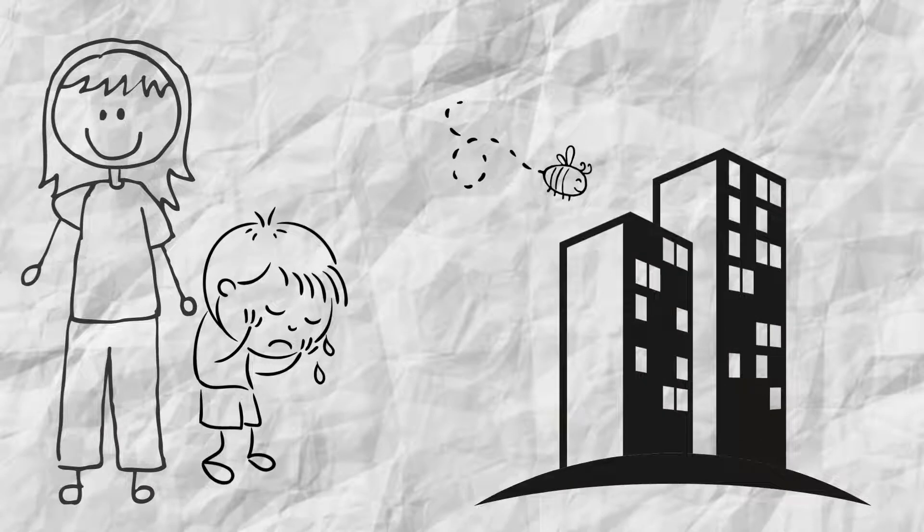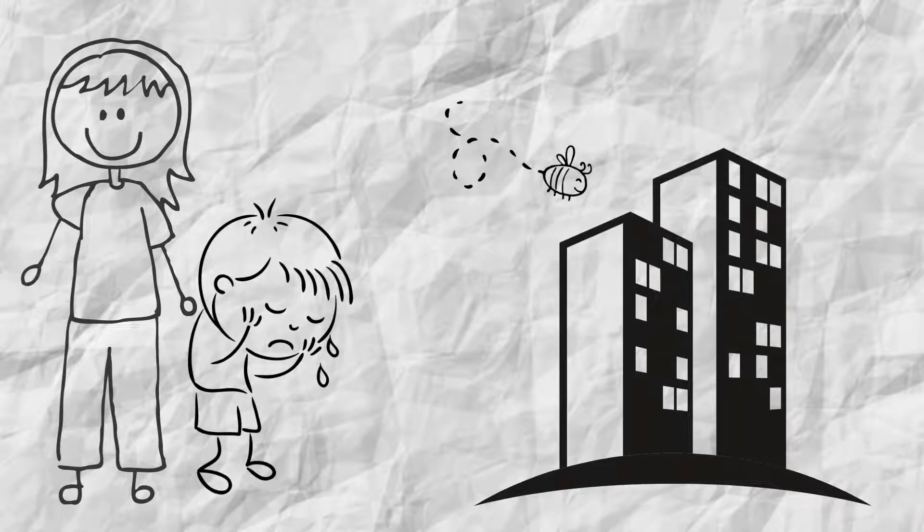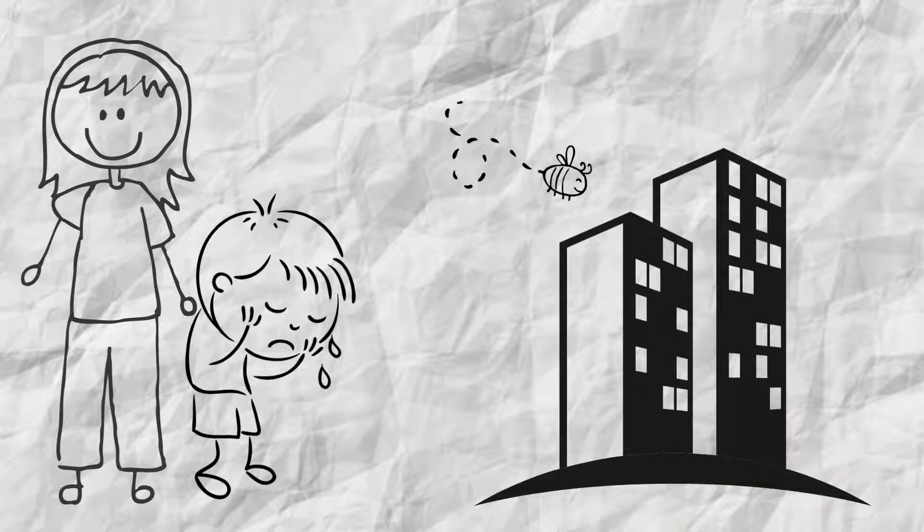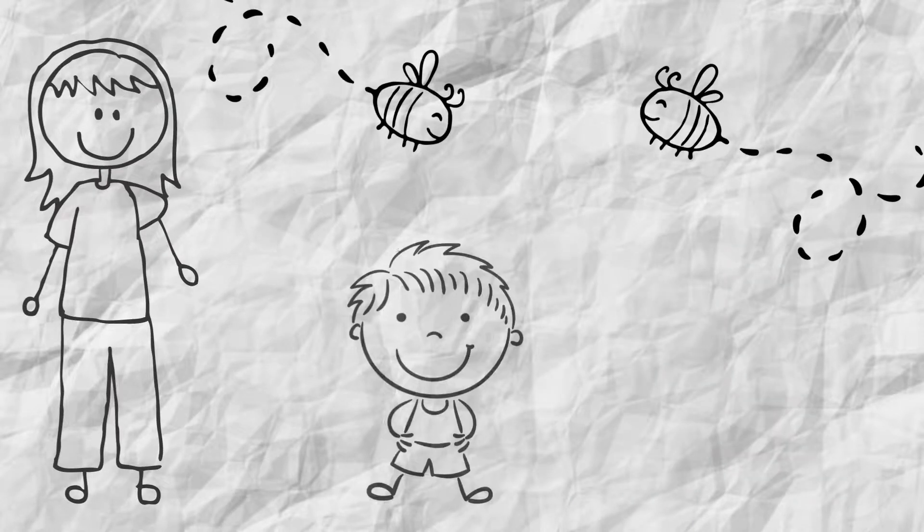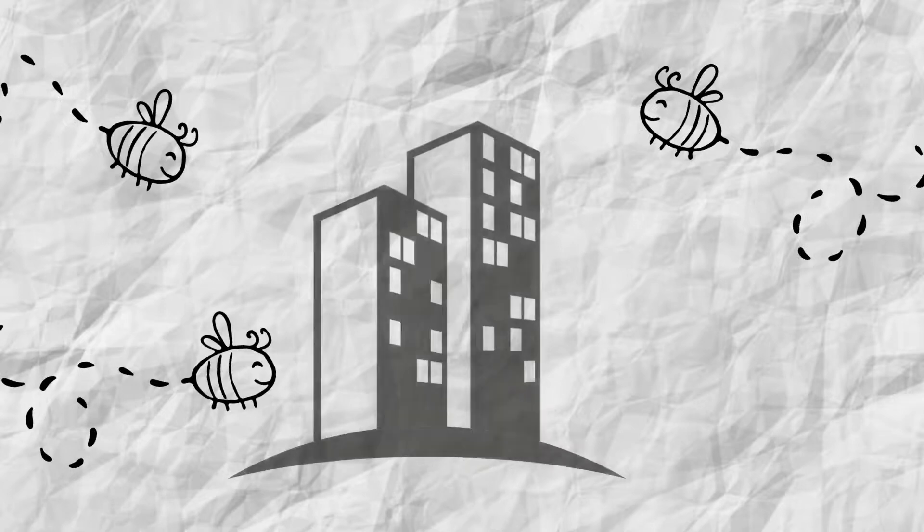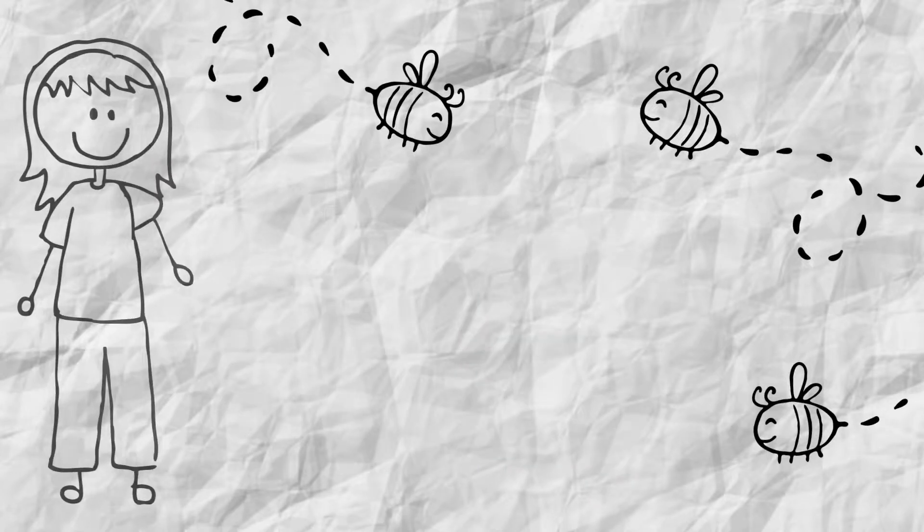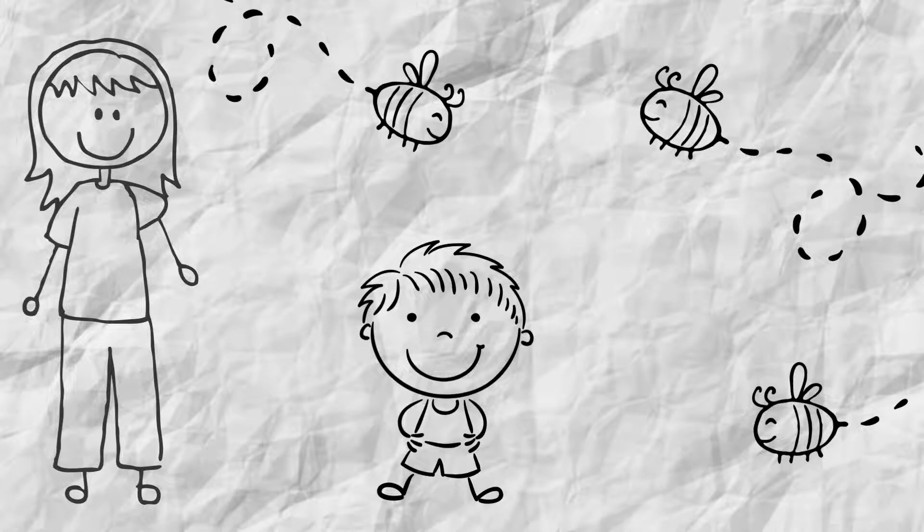But do you think bees could build a skyscraper? Ian grinned. Of course not. But neither could we, Mom. Mom laughed. True. But there are engineers and builders and other people who know how to build them. Do you think if they explained how to build a skyscraper, bees could build one? Ian shook his head. They're just tiny little bugs and we're humans. You know they can't understand the things we do or say.